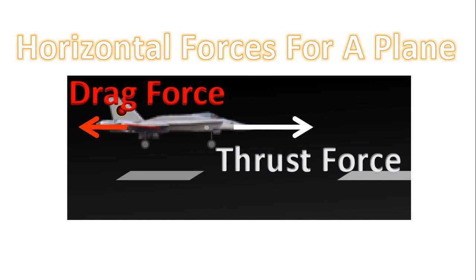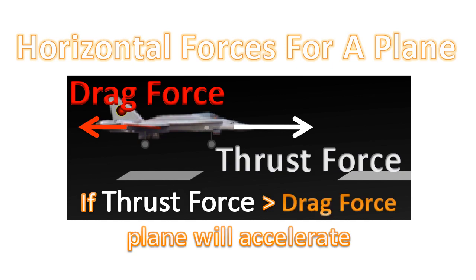For an airplane, the two primary forces acting in the horizontal direction are thrust and drag. Thrust is created by the engines of a plane or the propeller. Drag is created by air resistance — drag holds the plane back. Thrust pushes the plane forward. As long as the thrust force is greater than the drag force, the plane will accelerate forward.